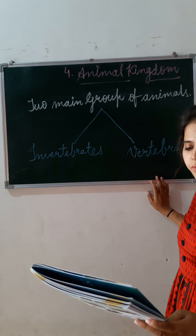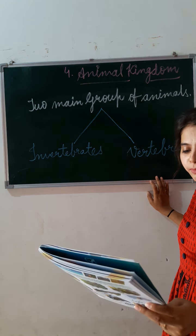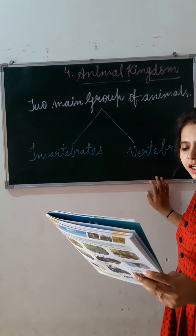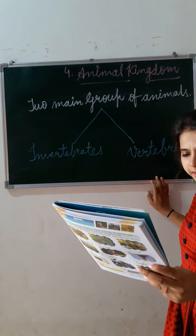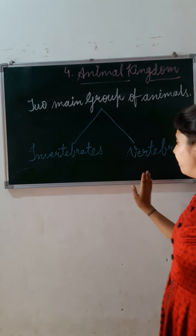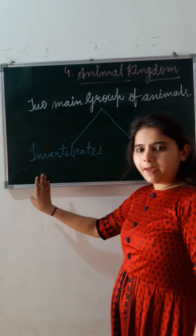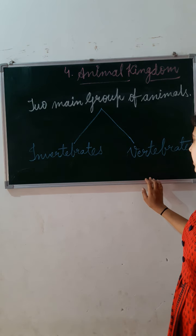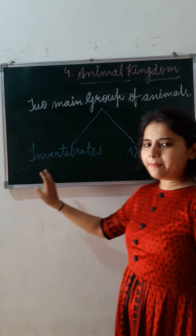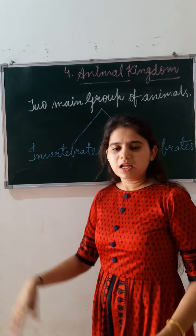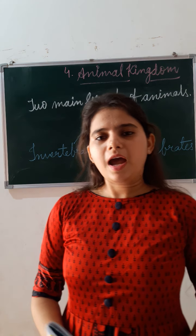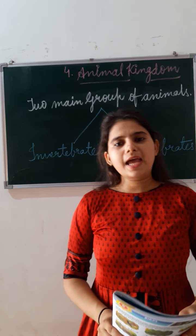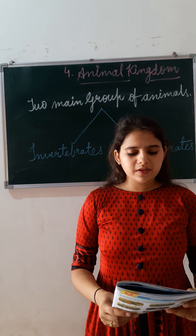Example dekho apne book ke andar — vertebrates mein hain: human being, elephant, cheetah, cow — jinke paas backbone hoti hai, woh hain vertebrates. Animals that have a backbone — don't have backbone and that have a backbone. Vertebrates jinke paas hai aur invertebrates jinke paas nahi hai. I hope you all understand.